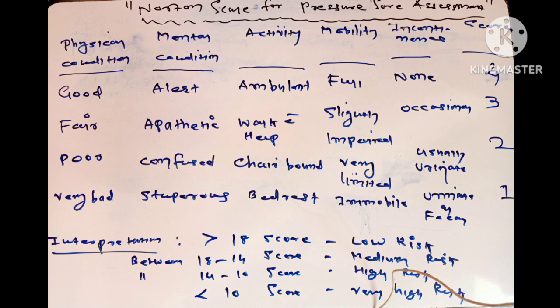Let us understand with an example. Suppose there is a bedridden person in the hospital whose physical condition was good, mental condition was alert, activity was ambulant, mobility was full, and incontinence was none. That means each area scores four. Five areas multiplied by four equals twenty.